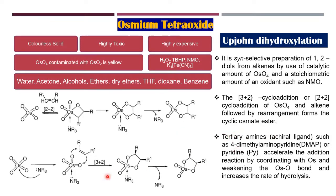What is the role of these trialkyl amines? Tertiary alkyl amines or achiral ligands such as 4-dimethylaminopyridine (DMAP) or pyridine accelerate the reaction — that is, the cycloaddition reaction — by coordinating with the osmium and weakening the Os bond. This also increases the rate of hydrolysis.